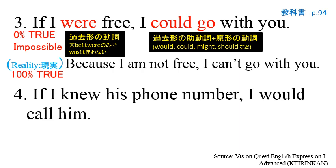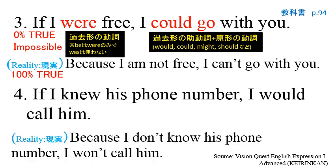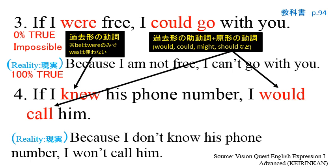Okay, let's take a look at the Number 4 sentence. If I knew his phone number, I would call him. The reality behind this sentence is: Because I don't know his phone number, I won't call him. The verbs used in the Number 4 sentence are 'knew' and 'would call.' Again, the verb is the past, plus the past of the helping verb and the verb.